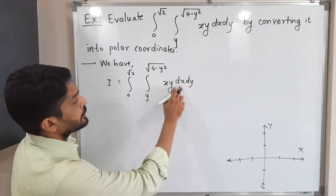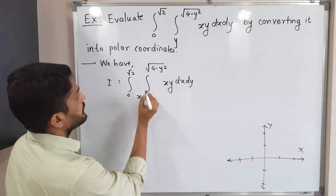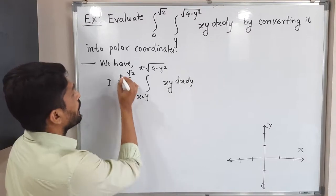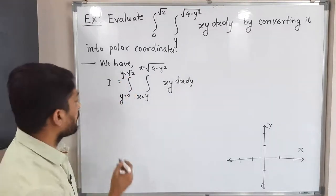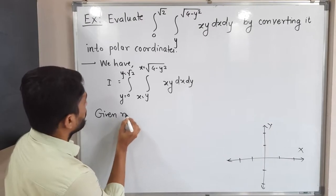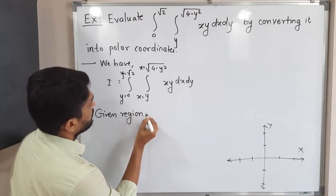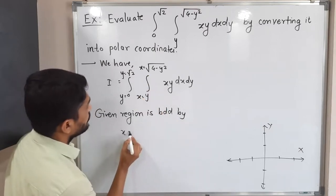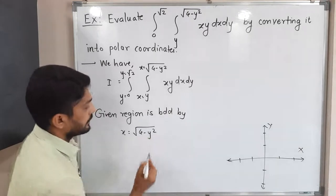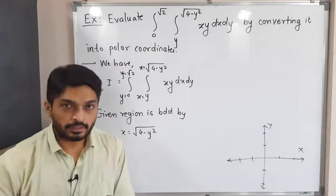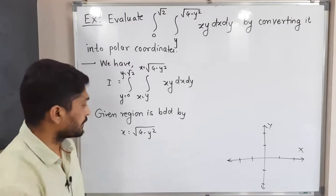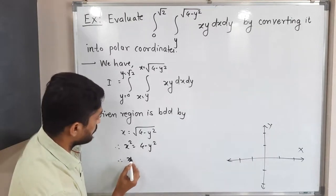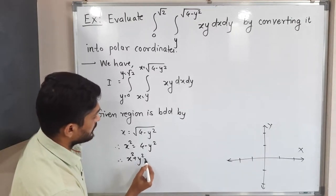The inner integration is with respect to x, so we have limits of x here. The outer integration is with respect to y, so these are limits of y. The given region is bounded by x = √(4 − y²). We remove the square root by squaring both sides, giving x² = 4 − y², or x² + y² = 4.